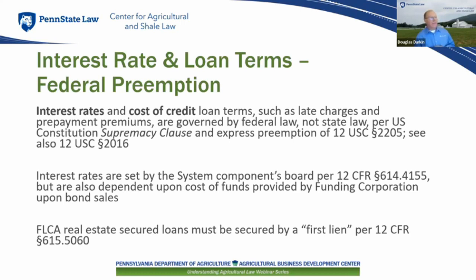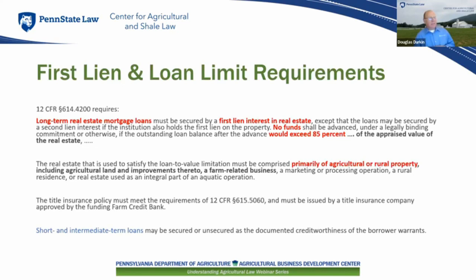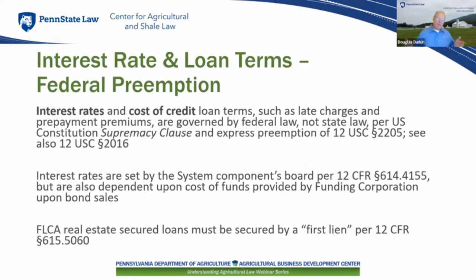Our interest rates and the cost of credit are all determined by federal law — this is not a matter of state law. State law does not control our late charges, our prepayment premiums, or our interest rates, because of the U.S. Supremacy Clause, as cited in the two U.S. statutes in the materials. Our interest rates are set by the various components' board of directors, but they're also controlled by the funding corporation and the bonds sold on Wall Street. That's why there's a current difference in what banks can offer in interest rates — their rates are based upon what they're paying depositors. We don't have depositors; we're dealing with bond investors.